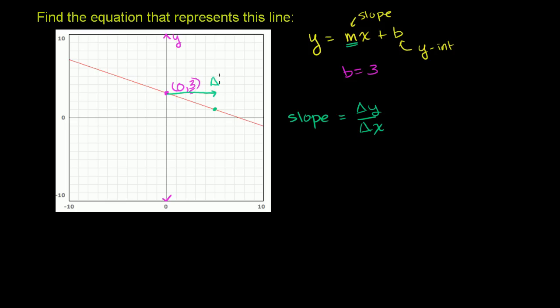So our change in x is equal to 5: 1, 2, 3, 4, 5. We went from x equals 0 to x equals 5. So our change in x is equal to 5.